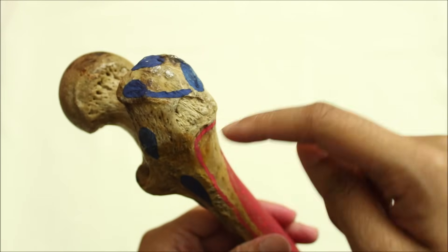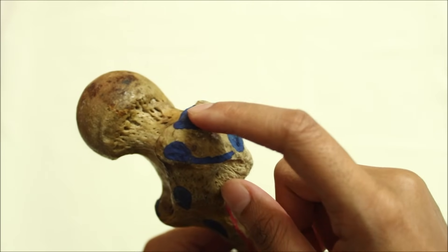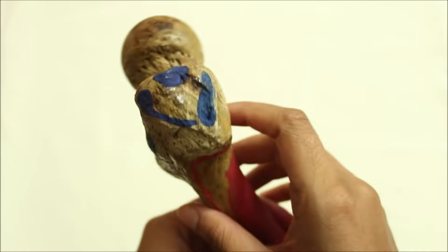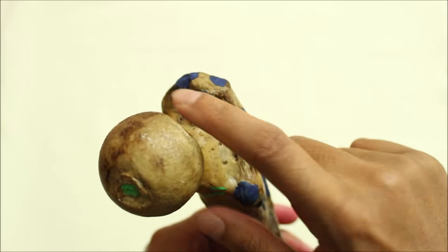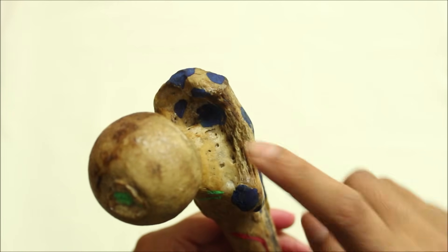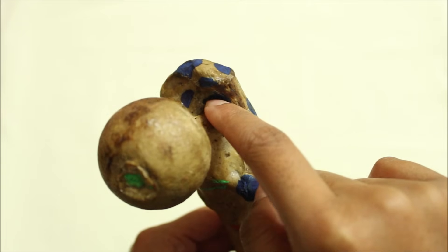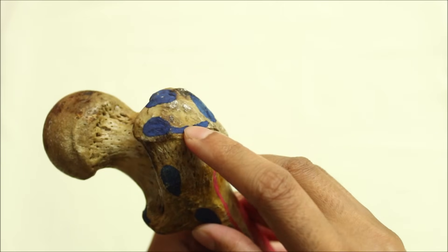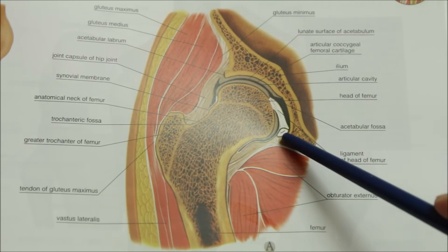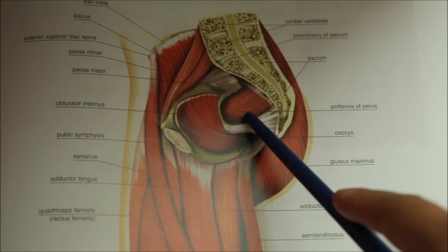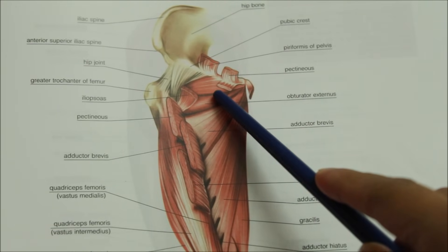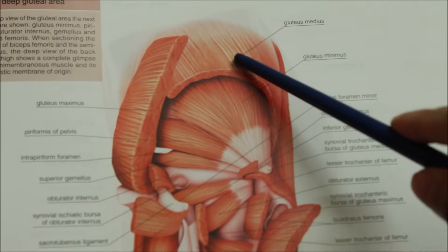Beginning with the head of the femur, the fovea provides attachment to the ligament of the head of the femur — also called the ligamentum teres or ligamentum femoris. Moving on to the attachments on the greater trochanter: the piriformis is inserted into the apex; the gluteus minimus is inserted into the rough lateral part of the anterior surface; the obturator internus and the two gemelli are inserted into the upper rough impression on the medial surface; the obturator externus is inserted into the trochanteric fossa; and the gluteus medius is inserted into the ridge on the lateral surface.